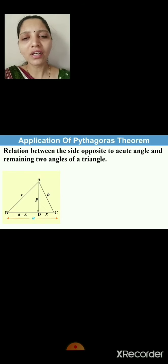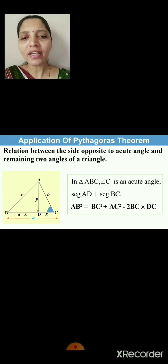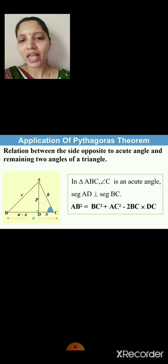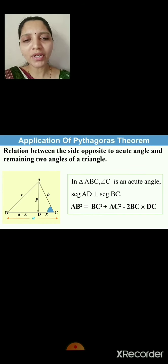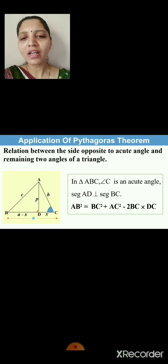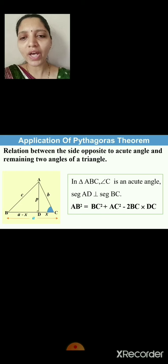Let's take a quick revision. In triangle ABC, angle C is an acute angle and segment AD is perpendicular to segment BC. The relation for the side opposite to the acute angle is: AB² = BC² + AC² − 2·BC·DC. Remember: the side opposite to the acute angle squared equals the sum of the squares of the remaining two sides, minus 2 times the base BC times CD.